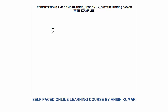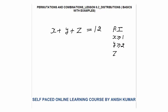Let's say x plus y plus z is equal to 12, where all are positive integers — x, y, and z. The condition given is that x is greater than or equal to 1, y is greater than or equal to 2, and z is greater than or equal to 3.